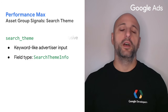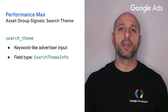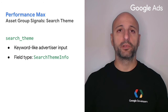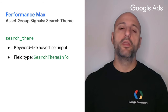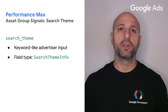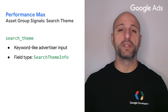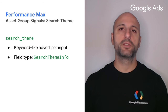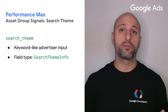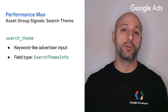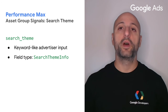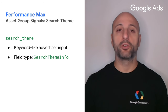A search theme is a keyword-like advertiser input that helps optimize targeting. This new criterion type can only be used in performance max campaigns to create an asset group signal by populating the asset group signal dot search theme with a search theme info criterion.